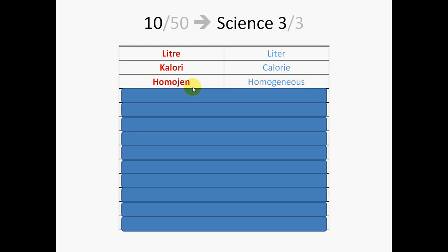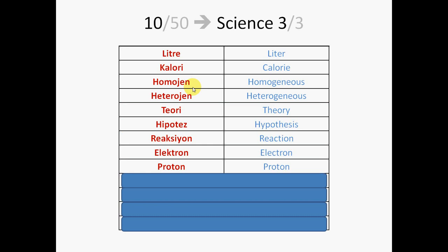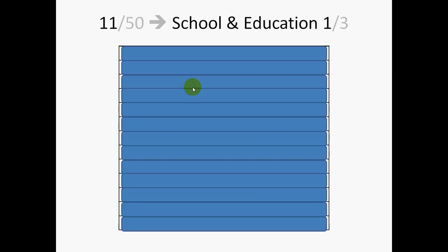Litre. Calorie. Homogen. Heterogen. Theorie. Hypothese. Reaction. Electron. Proton. Neutron. Mutation. Aceton. Pasteurize. Depending on your age, education level or fields of interest, some of these words might be unknown to you. Well, in that case, you might just skip these words and concentrate on the easy ones which you already know. So, I don't want these words to stop you from continuing the lesson.